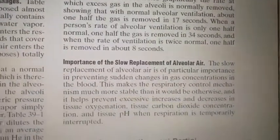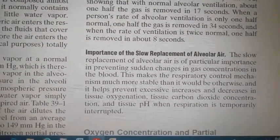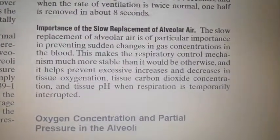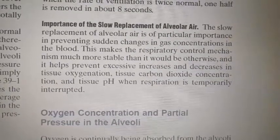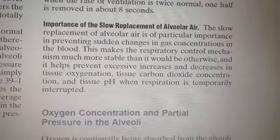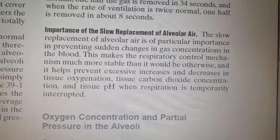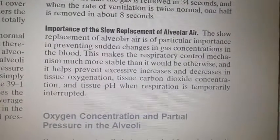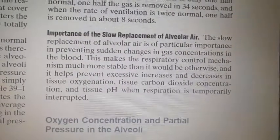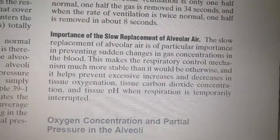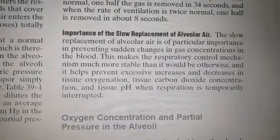What is the importance of this slow replacement of alveolar air? The slow replacement is of particular importance in preventing sudden changes in gas concentration in the blood. This makes the respiratory control mechanisms much more stable than they would otherwise be, and it helps prevent excessive increases and decreases in tissue oxygenation, tissue carbon dioxide concentration, and tissue pH when respiration is temporarily interrupted. The slow replacement of alveolar air allows respiratory control mechanisms to remain stable and prevents excessive alteration in tissue oxygenation, CO2 concentration, and pH.